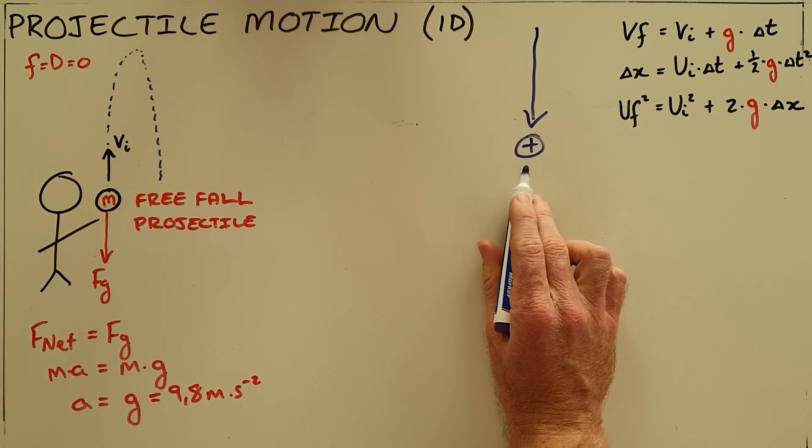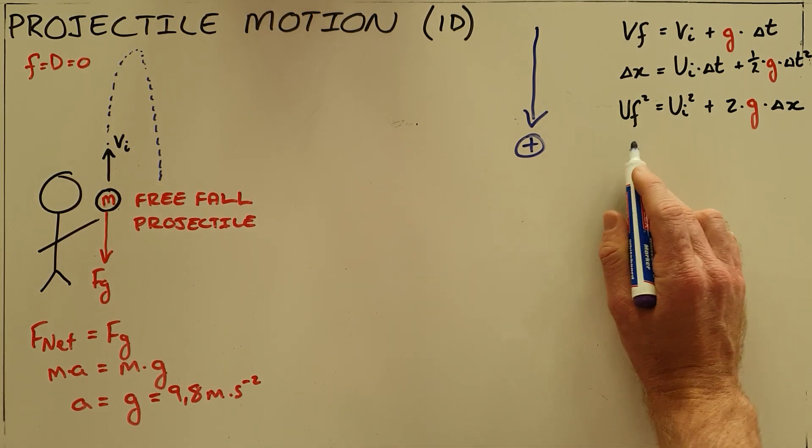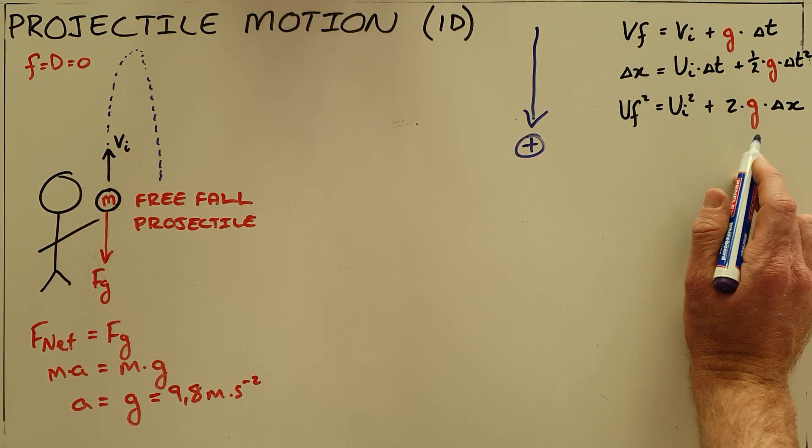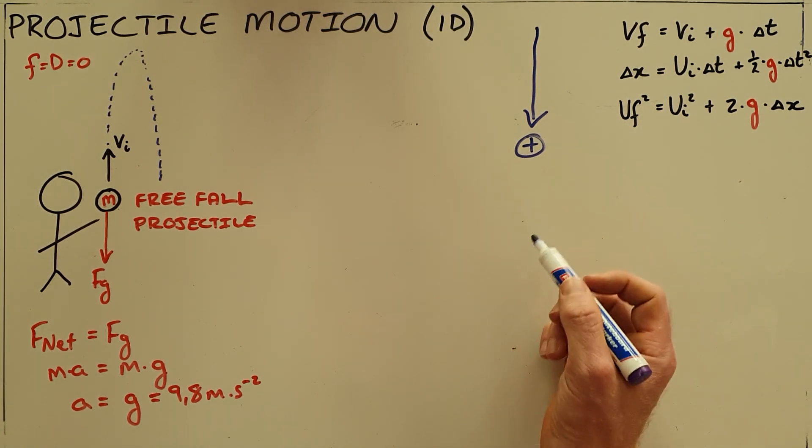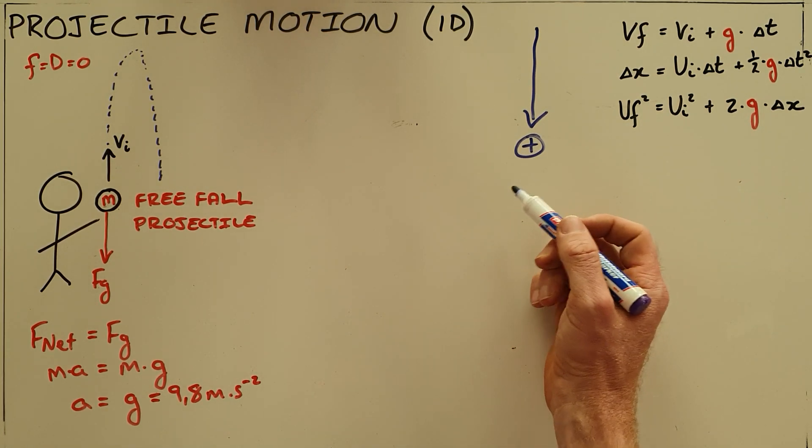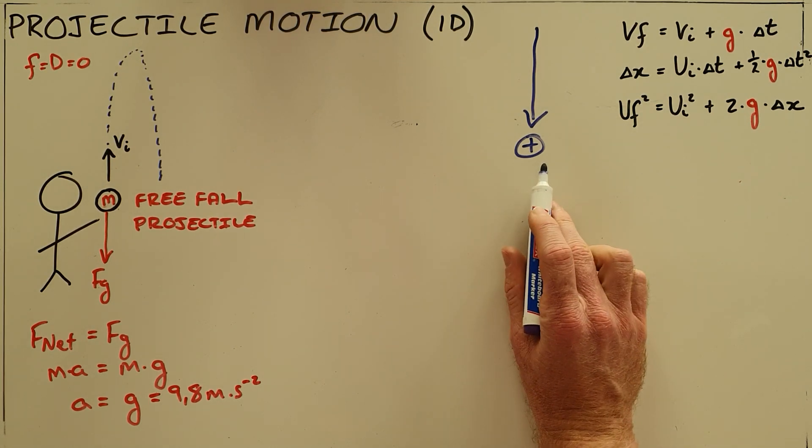We prefer to use downward as positive because that way the acceleration is always positive, and we know that any negative value refers to an upward vector. But you can use the opposite of this as well.